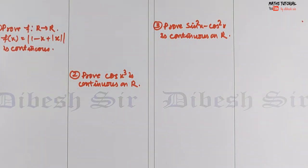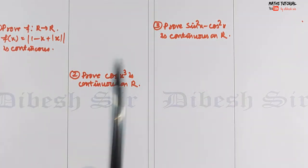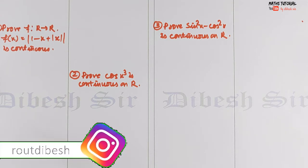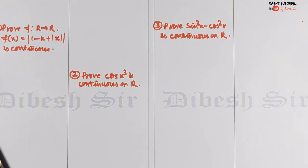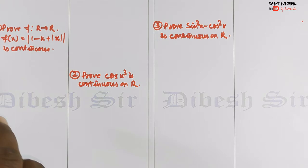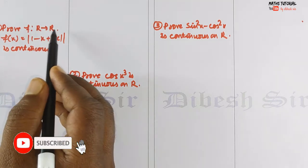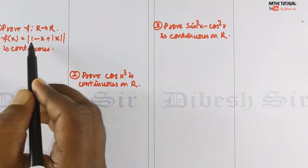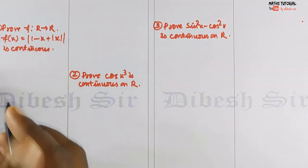Hello students, good morning and welcome back to our YouTube channel Maths Tutorial by the Baser. This is our lecture number six, chapter number five: Continuity and Differentiability, Class 12. In the previous class we discussed the algebra of continuous functions, some important results, and continuity of composite functions. Today we will discuss some problems regarding that.